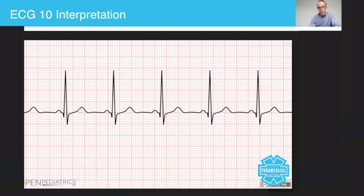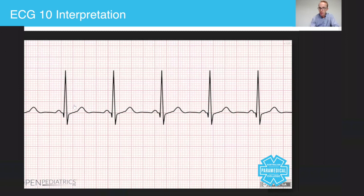Is there a T wave after every QRS complex? Yes — that means the ventricles are relaxing nicely. The QRS represents ventricular contraction or ventricular depolarization, and the T wave represents ventricular repolarization or ventricular relaxation.